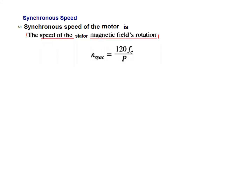During our discussion we come across the term synchronous speed, also called the synchronous speed of the motor. This is primarily the speed of the stator magnetic field rotation. It is denoted as N_sync and given by the formula: N_sync = 120 × f_E / P, where f_E is the frequency of the supply voltage to the stator and P is the number of poles.